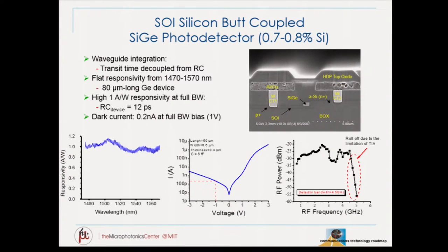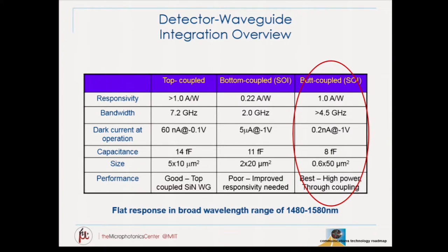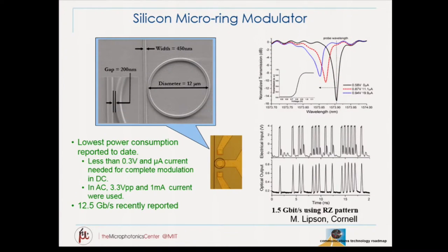The initial results were pretty exciting — showing flat responsivity over a wide range from 1470 to 1570 nm for an 80-micron long device that's only 500 nanometers wide and 200–400 nanometers thick. Excellent responsivity at 1 amp per watt, with a 12 picosecond response and very low dark current. Butt coupling turned out to be an excellent design. The silicon micro-ring modulator is another approach — showing the shift in absorption based on effective voltage to create the modulation effect.